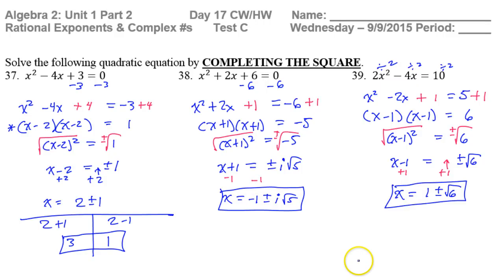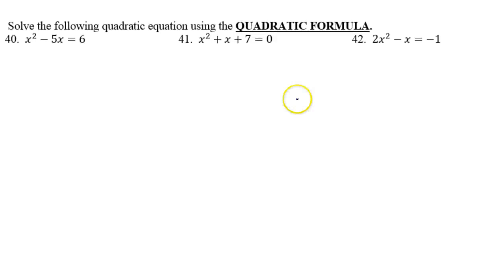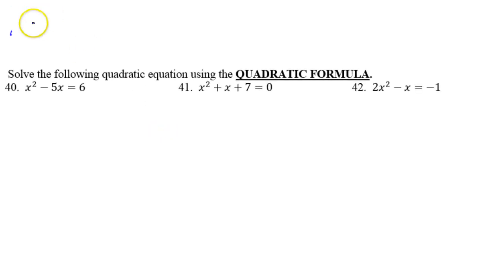This video is going to be all about quadratic formula. So for the quadratic formula, I really want you to do the discriminant first. Remember that the discriminant we find by doing b squared minus 4ac. So let's do that first.